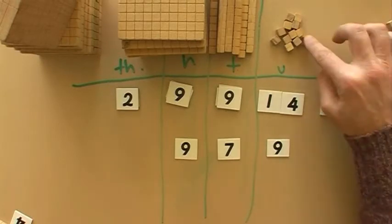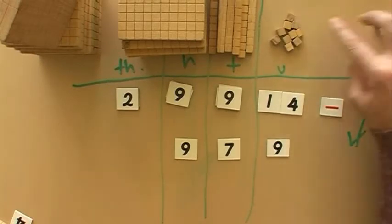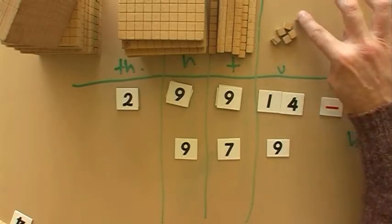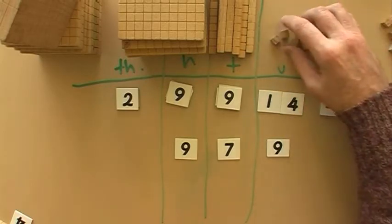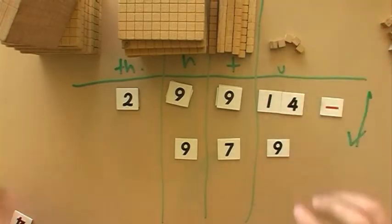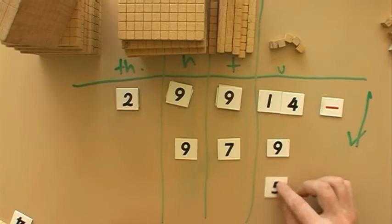So we've got fourteen here. We're going to take away nine. One, two, three, four, five, six, seven, eight, nine. Fourteen take away nine is what? What's left? One, two, three, four, five. Five, five is left. So that's done.